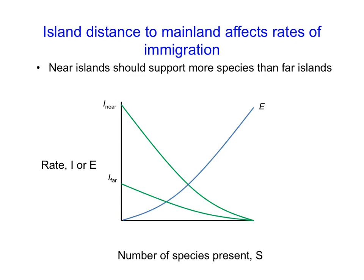Likewise, distance from the mainland affects immigration rate while extinction rate remains fixed. An island close to the mainland has the original high immigration rate, whereas an island further from the mainland has a reduced immigration rate — shown as a lower curve. The number of species predicted on a near island is greater than on a far island, and turnover on a near island is higher than on a far island.